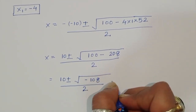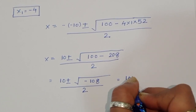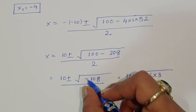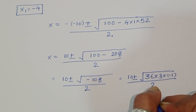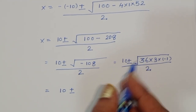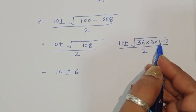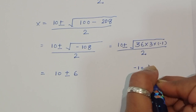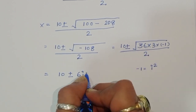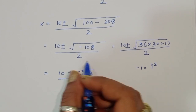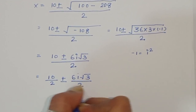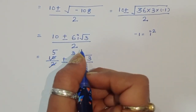Factoring 108 as 36 times 3, so √(minus 108) equals √36 · √3 · √(minus 1) equals 6√3 · i, since √(minus 1) equals i. So x equals [10 ± 6i√3] / 2, which simplifies to 10/2 ± 6i√3/2 equals 5 ± 3i√3.